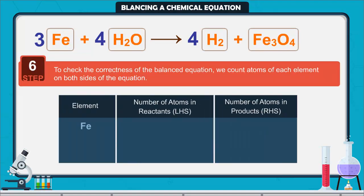Step 6. To check the correctness of the balanced equation, we count atoms of each element on both sides of the equation. The numbers of atoms of elements on both sides are equal. This equation is now balanced.